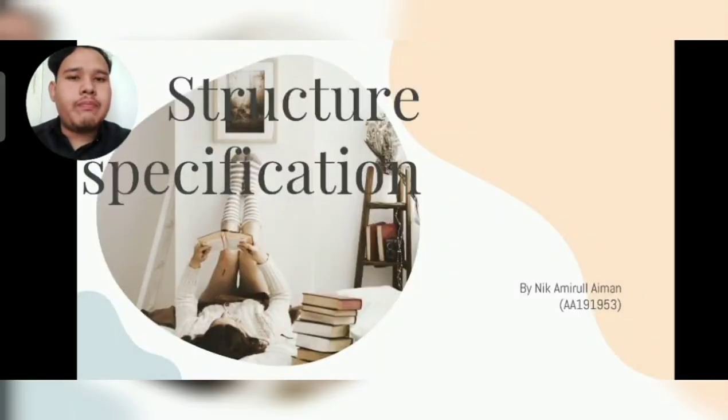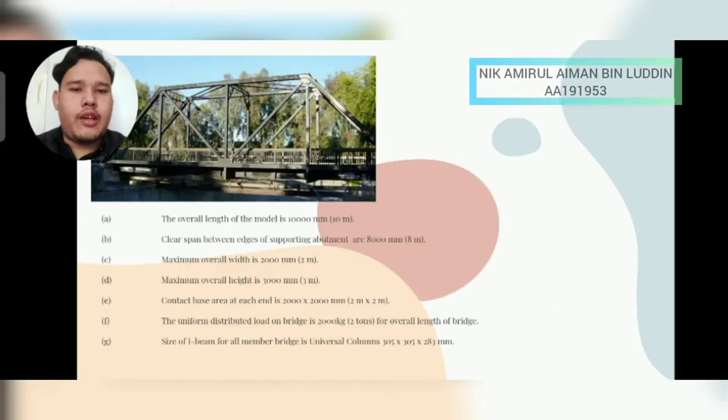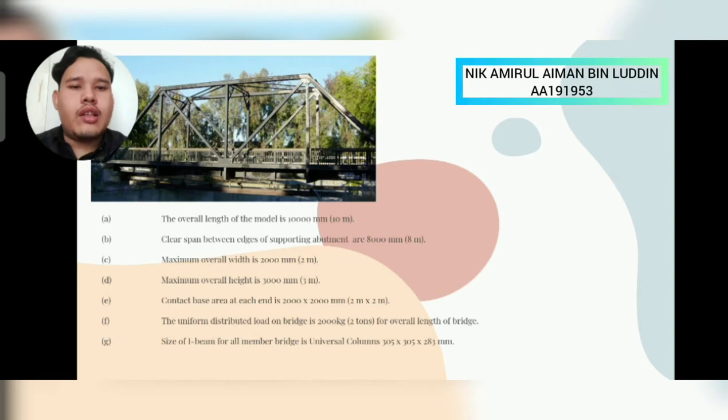Assalamualaikum. My name is Amirul Aiman. Today I will present about structure specification. The overall length of the model is 10m, clear span between edge of supporting equipment are 8m, maximum overall width is 2m and maximum overall height is 3m.